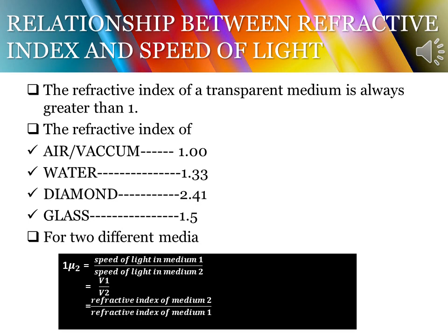If the refractive index of medium 1 and medium 2 are the same, the speed of light will be the same in both media. So a ray of light will pass from medium 1 to medium 2 without any change in its path, even when the angle of incidence in medium 1 is not 0.